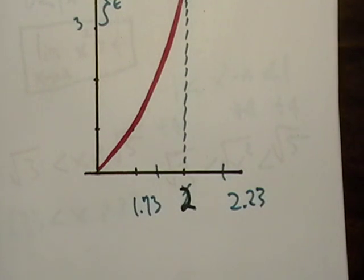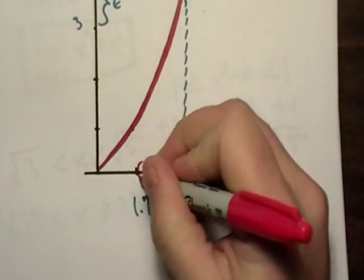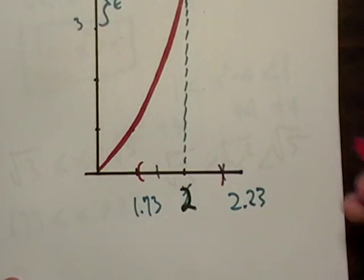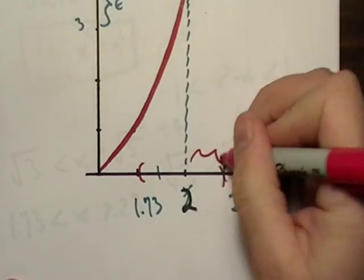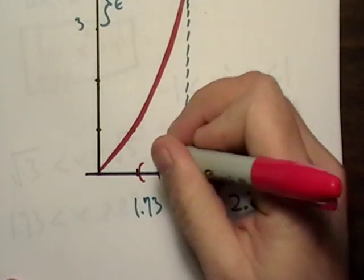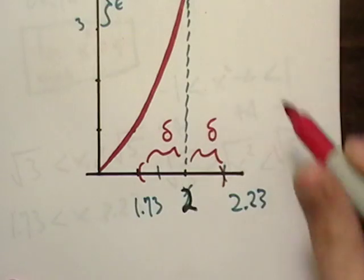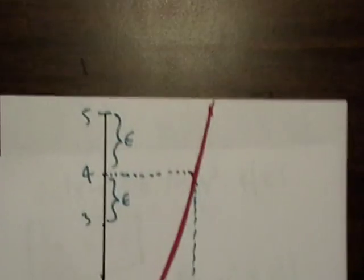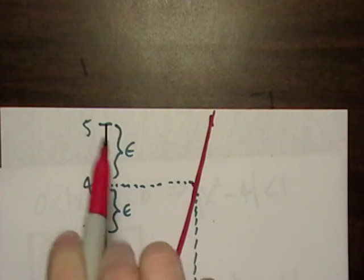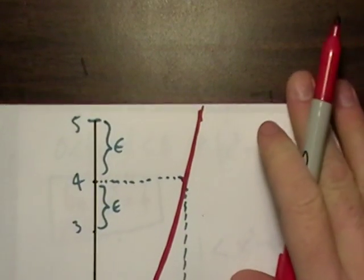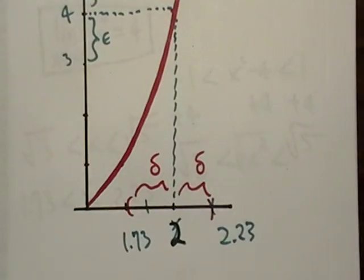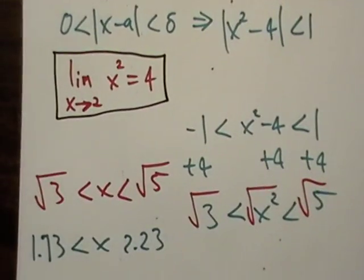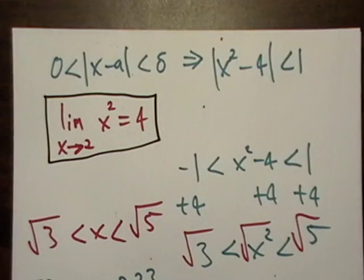So basically, all I have to do is I have to choose what's going to be called a delta. Interval over here. This distance here, we'll call it delta. And this delta's job is going to ensure that this situation up here, being within one unit of four, make sure that is true while at the same time satisfying the inequality.